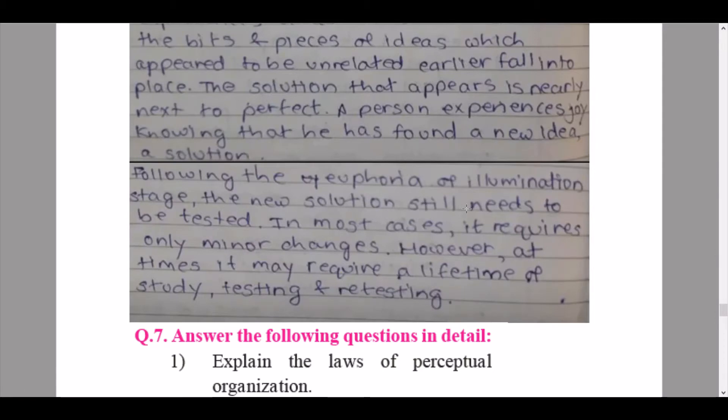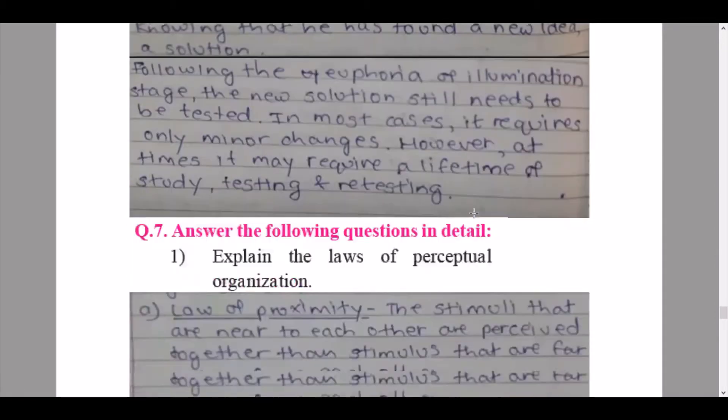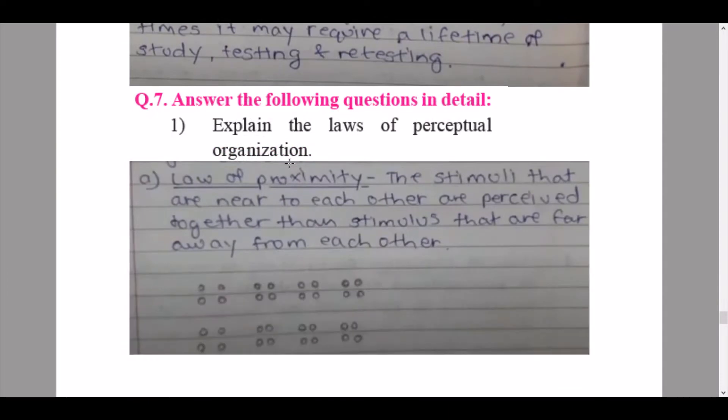Then we continue to our question number seven: answer the following questions in detail. The first one given to us is explain the laws of perceptual organization. So we start with our first law, law of proximity. The stimuli that are near to each other are perceived together than stimulus that are far away from each other. So only the stimuli that are near to each other are perceived rather than the ones that are far from each other.